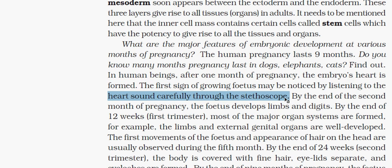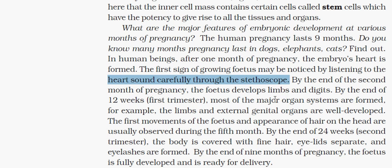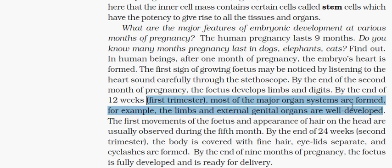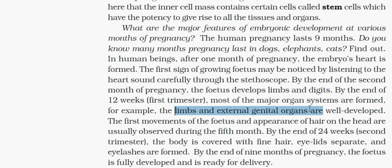After the fifth month, hair appears on the head. After the second trimester, the body is covered with fine hair, eyelids separate, and eyelashes are formed.